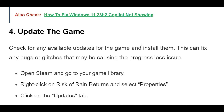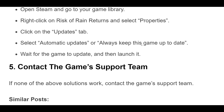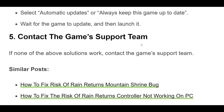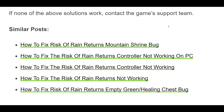Check for any available updates for the game and install them. This can fix any bugs or glitches that may be causing the progress loss issue. Open Steam and go to your game library. Right-click on Risk of Rain Returns and select Properties. Click on the Updates tab. Select Automatic Updates, or always keep this game up to date. Wait for the game to update, and then launch it.